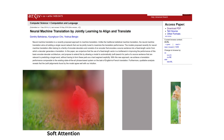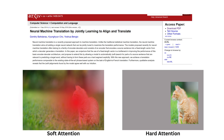In contrast, hard attention, also referred to as stochastic attention, takes a different approach by randomly selecting from sample elements to calculate the final context vector. This randomness introduces a reduction in computational time, which is a notable advantage.